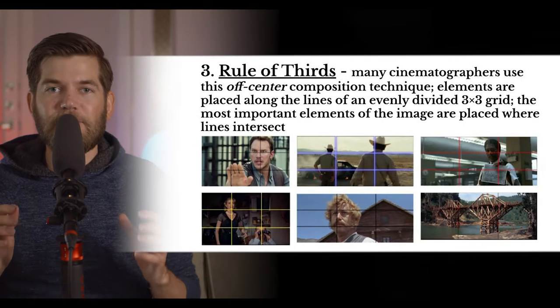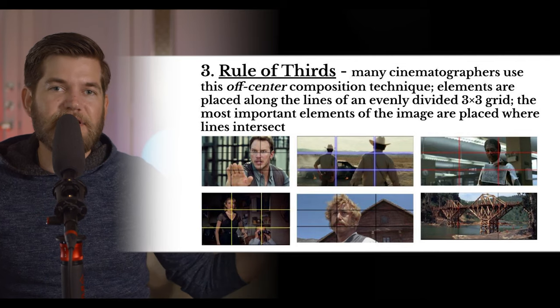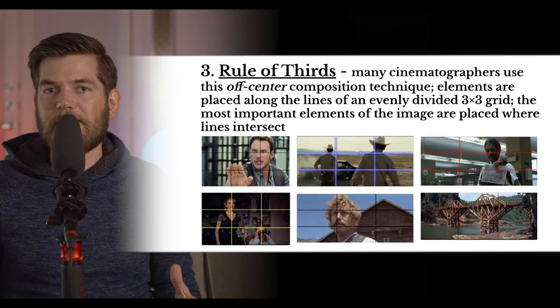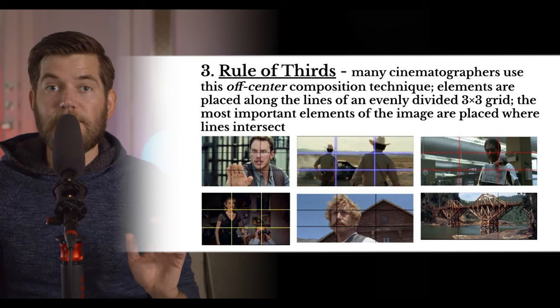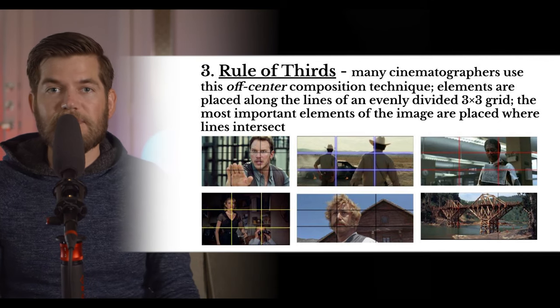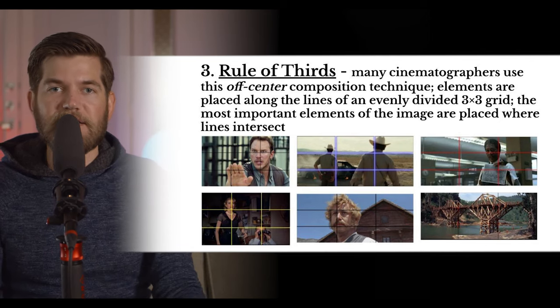Next, we have the composition technique I'm using right now: the rule of thirds. It's an off-center composition technique — my head is not placed in the middle of the frame because I am using the rule of thirds. To achieve this, I use a grid. The rule of thirds uses a simple grid that divides the frame with two vertical lines and two horizontal lines, creating nine boxes. Where those lines intersect is where you usually place subjects of interest, like how my head is currently placed at the intersection of the lines in this frame.